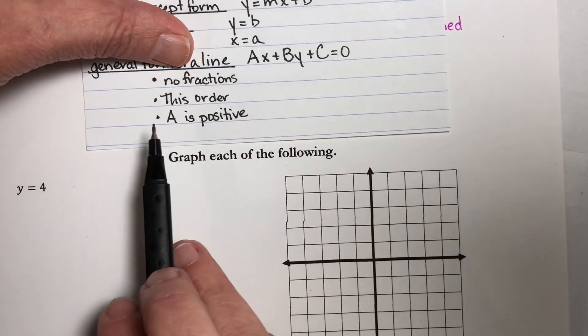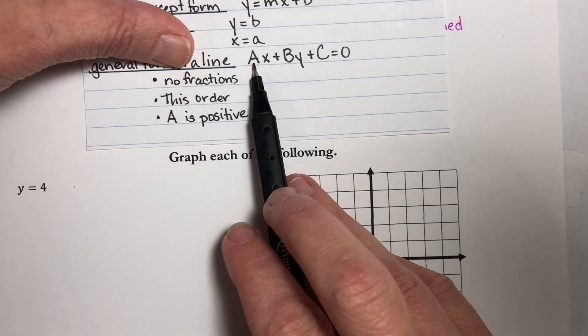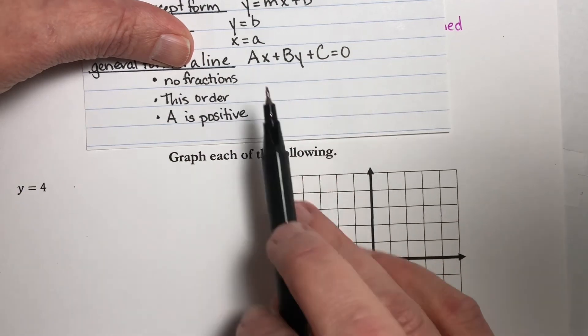They do want it in this order, and they want our first number to be positive. So if a happens to be a negative number, all we have to do is to multiply everything by a negative 1, and we have it in the right form.